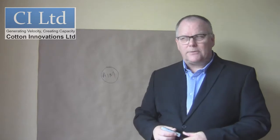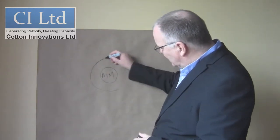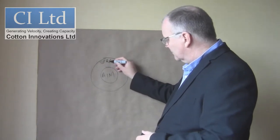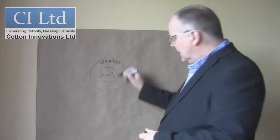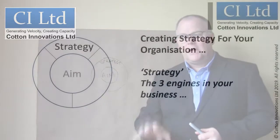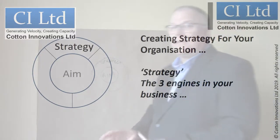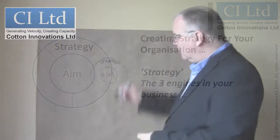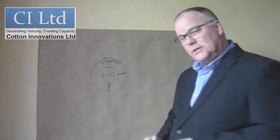The next thing we need to understand is the next circle around that, and this one is called our strategy. When we talk about strategy, there are three things we need to understand — and all strategies have only these three things. We can take our aim and split it into three strategies.